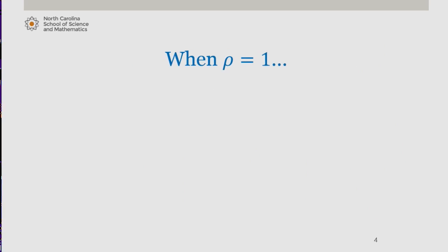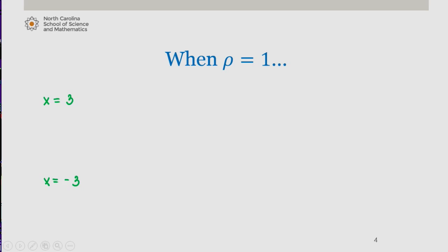We know that the ratio test does not give us a conclusion when rho is equal to 1. For our series, rho equals 1 when x is 3 and when x is negative 3. The ratio test tells us we will need a different test for convergence at those endpoints.